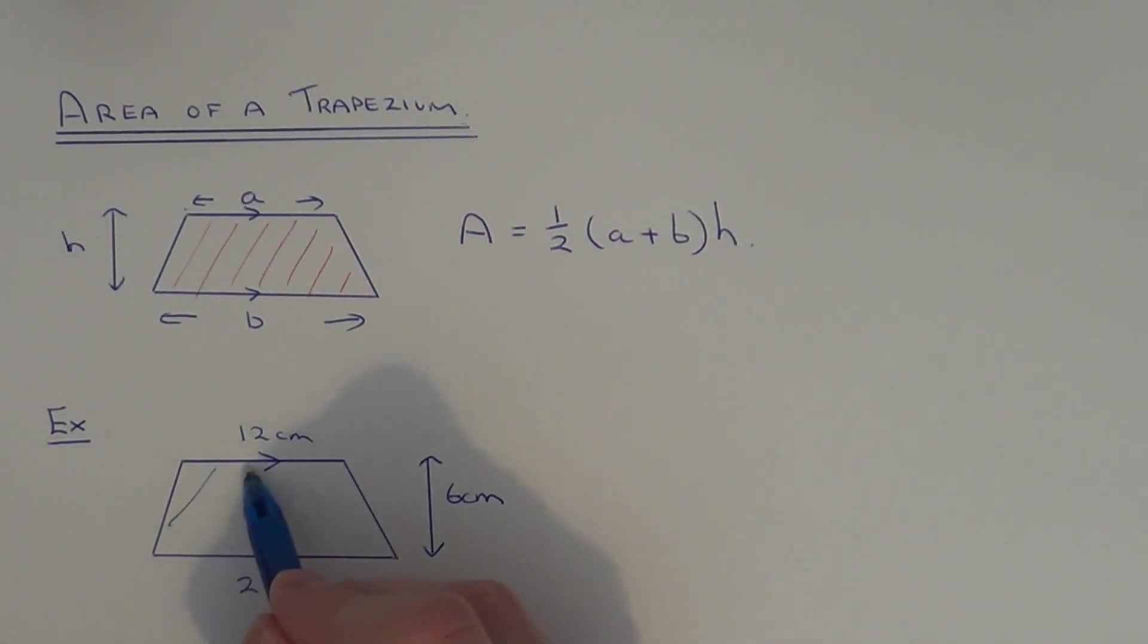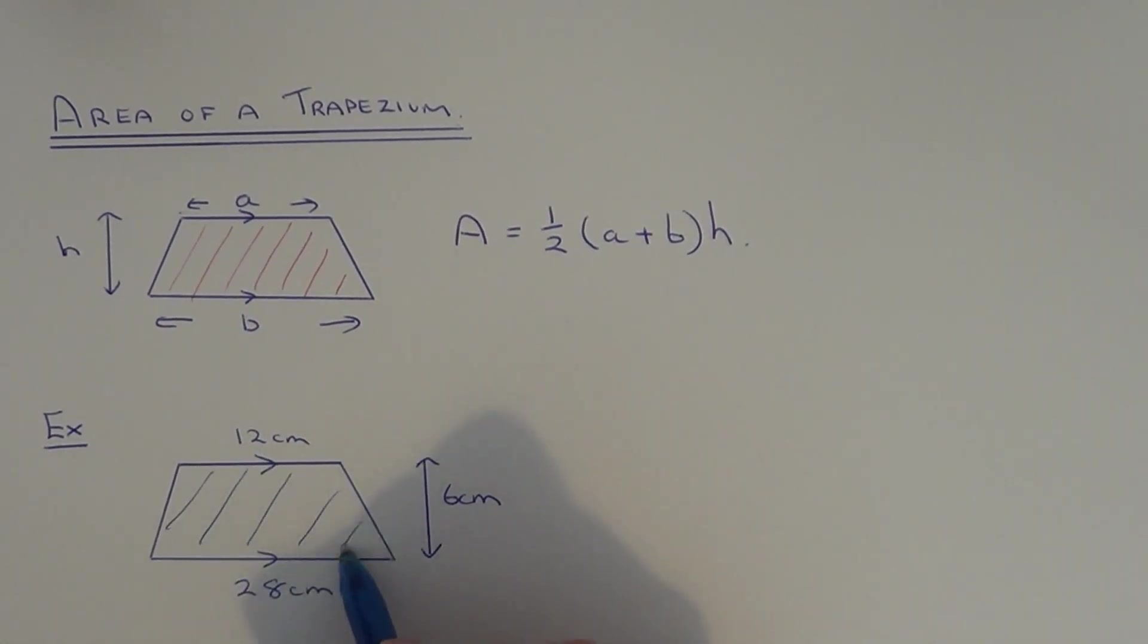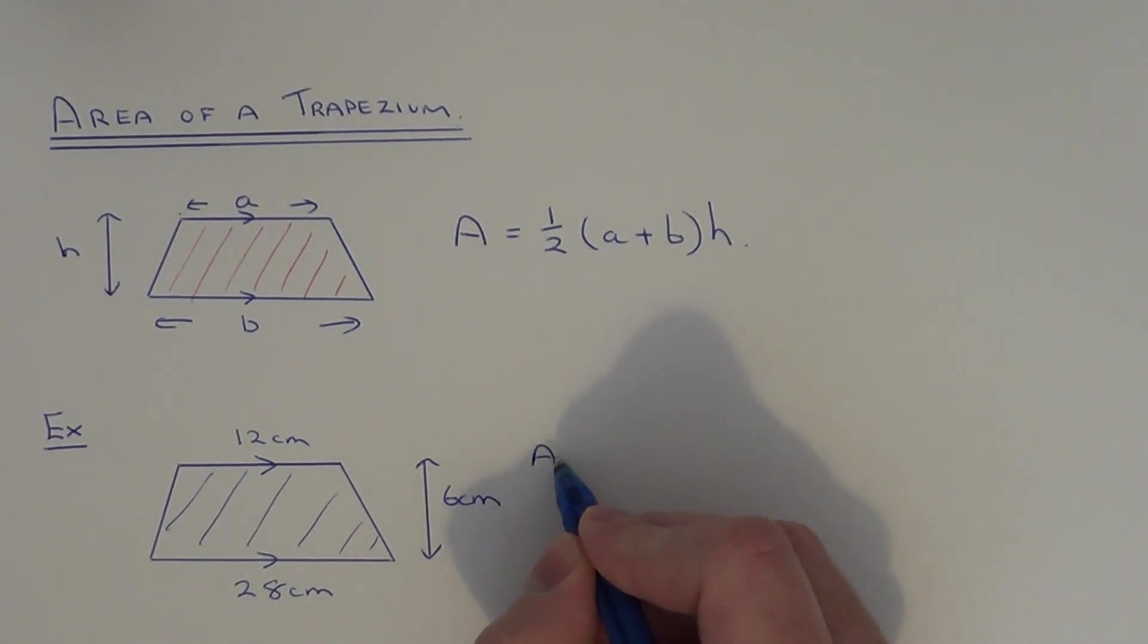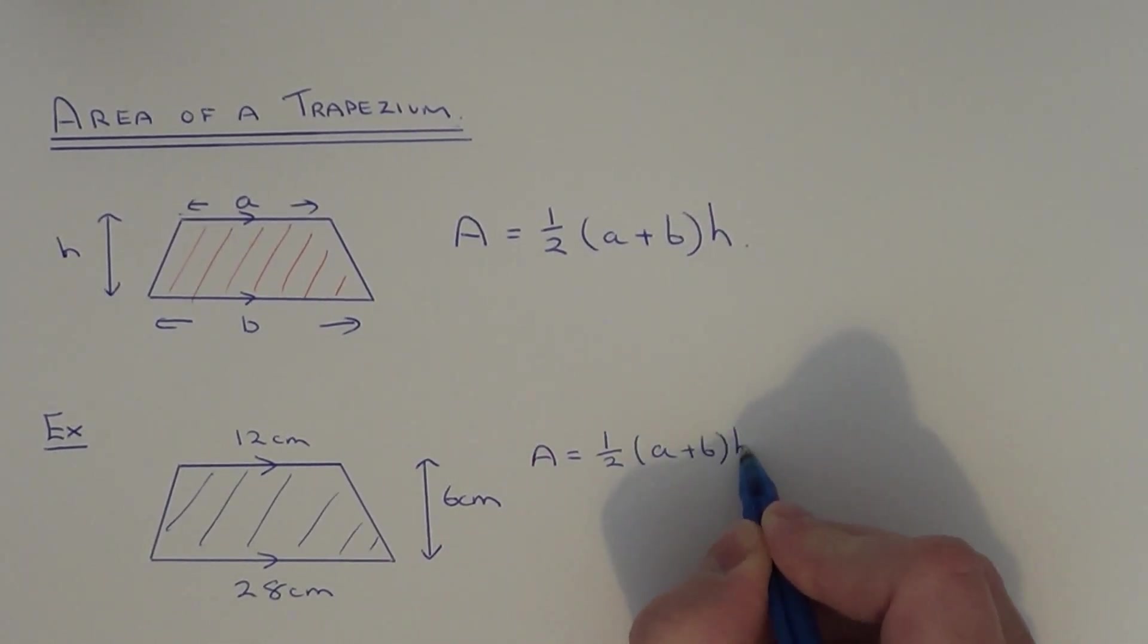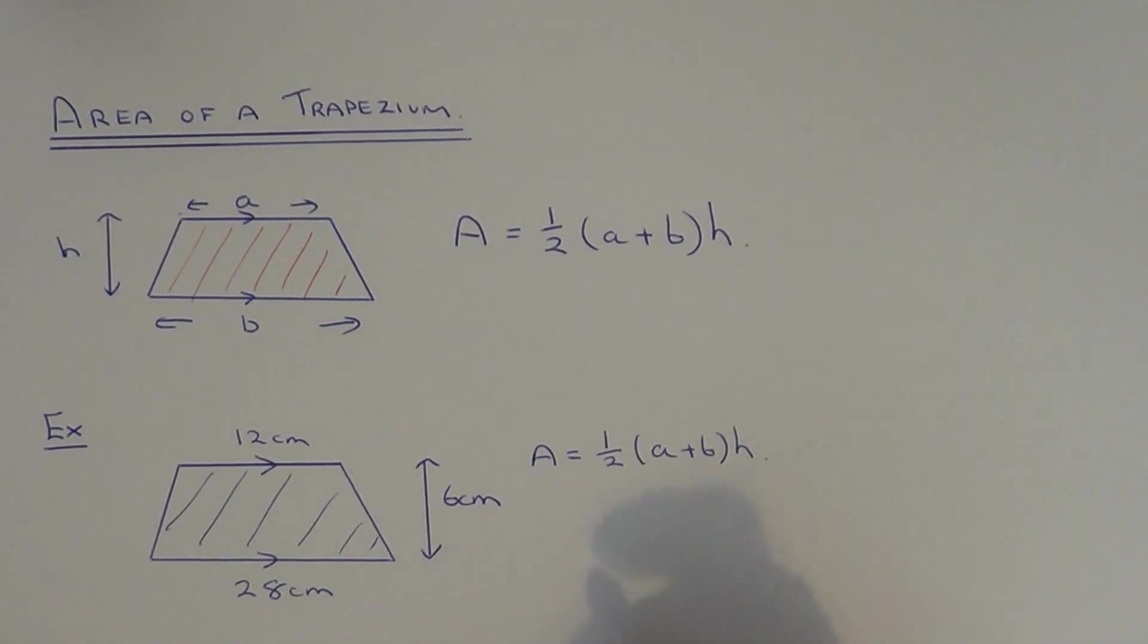We need to work out the area of this trapezium. The first thing I need to do is write down the formula A equals a half bracket a plus b h. What I need to do is substitute the values a, b and h into this formula.